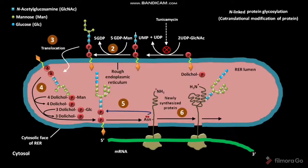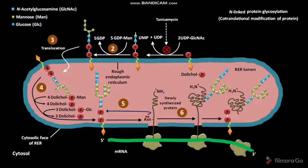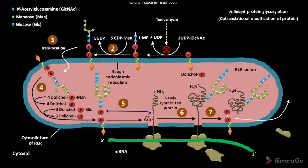Due to the transfer of the 14-residue oligosaccharide to the ASN residue of the growing nascent polypeptide chain, a dolicol pyrophosphate is produced along with the formation of the glycosylated nascent polypeptide chain. This is the seventh step of protein glycosylation, occurring within the RER lumen. At this stage, the newly formed protein is released from the ribosome and the ribosomal subunits dissociate from the mRNA. In the next step, the dolicol pyrophosphate is again translocated, moving across the RER membrane. This is the eighth step of protein glycosylation.